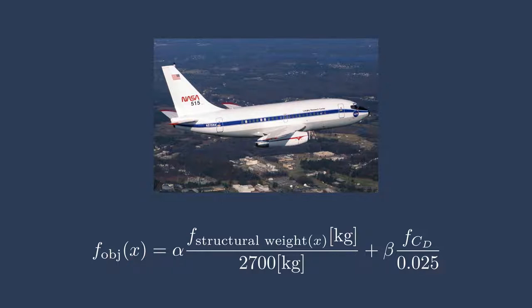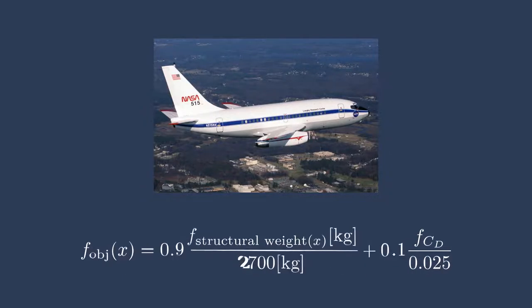Additionally, the alpha and beta values say how much we care about each one of the objective functions. We could simply split them 50-50 so that alpha and beta are equal, or if we care more about the structural weight as compared to the coefficient of drag, we could have 0.9 and 0.1, or we could also have 0.1 and 0.9 or any other values. Commonly, we see alpha and beta add up to 1, but you can use any kind of scaling values you want.